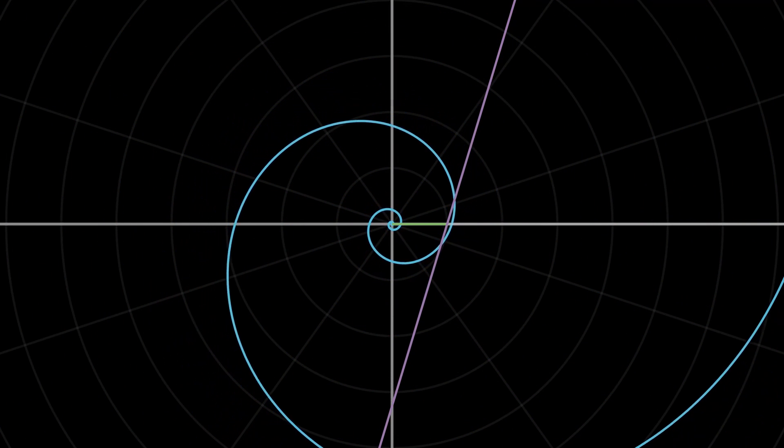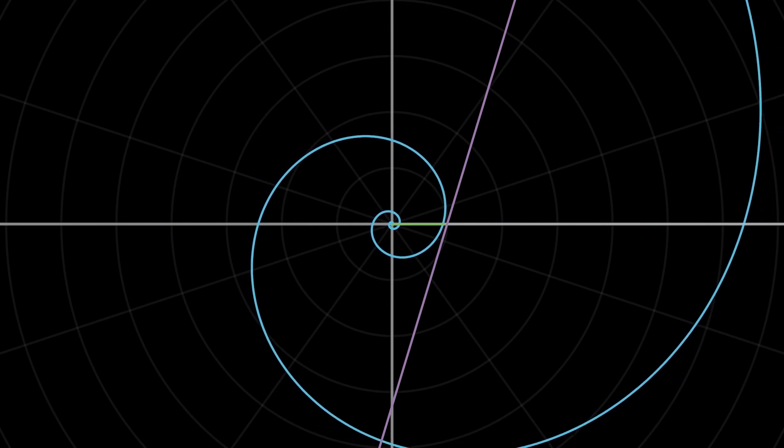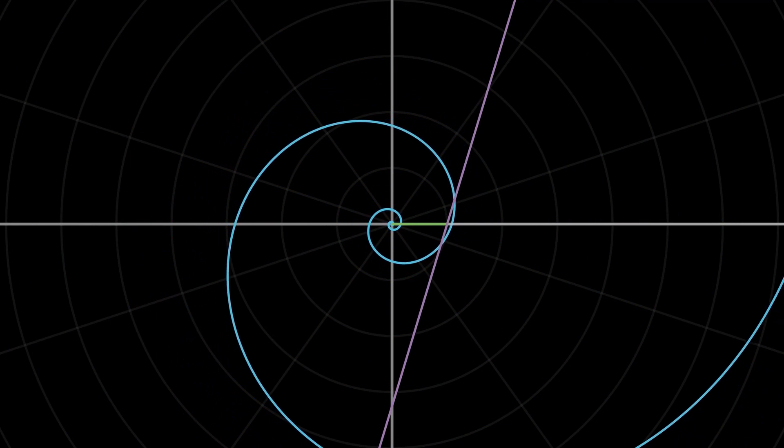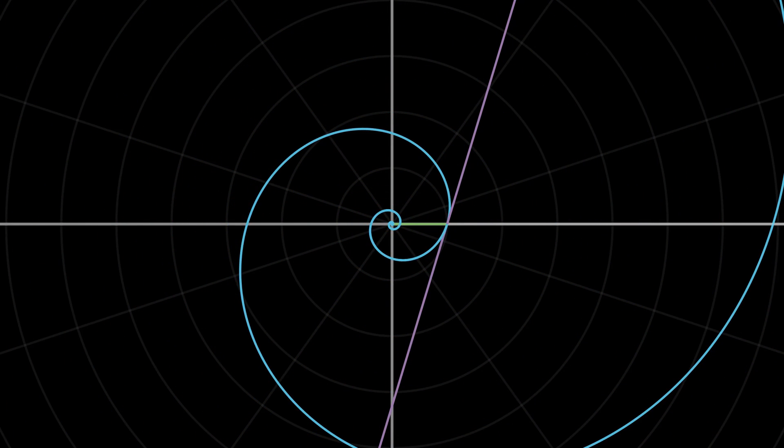For specific rotation angles, we even get the same curve again. Rotation is the same as scaling for logarithmic spirals. Let's take the point where the spiral meets the x-axis.